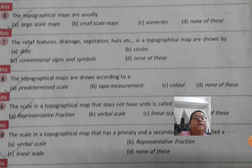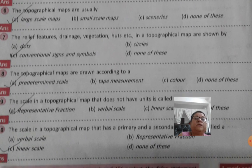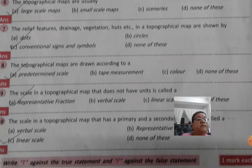The ready features, drainage, vegetation, hops, etc. in a topographical map are shown in conventional sites with the help of conventional sign and symbol.